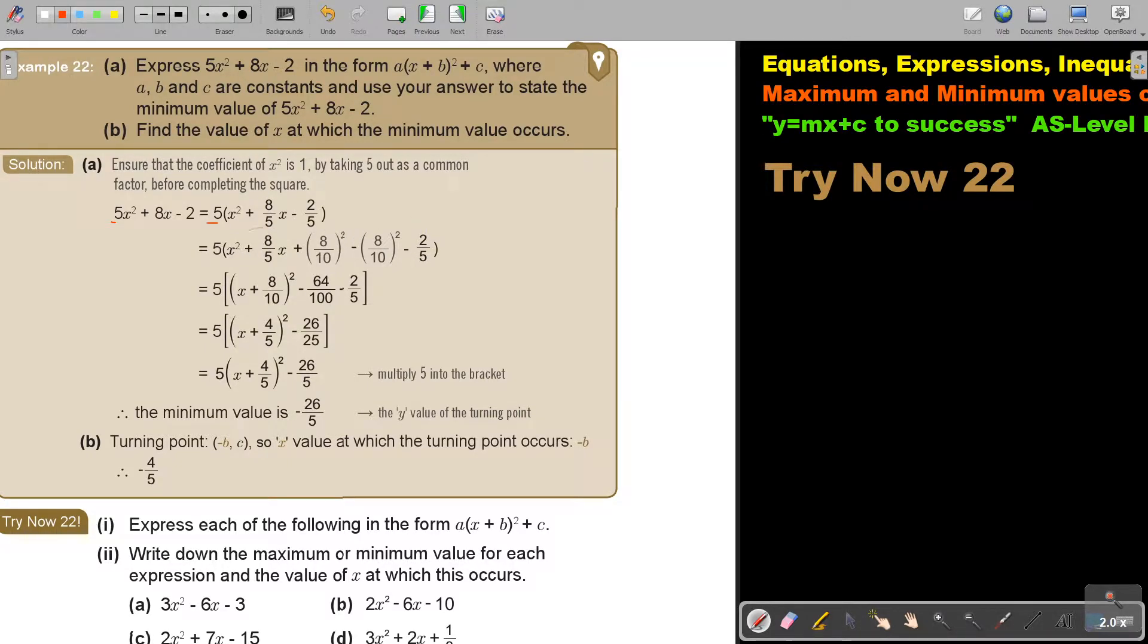And now I will just move this up, and then I will take this middle term, and I divide it by 2. And if you say 8 over 5, and if you divide by 2, then it's 8 over 5 multiply 1 over 2, which is 8 over 10. Then whatever I add, I must also subtract. And now this is my perfect square.